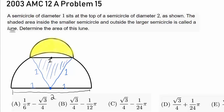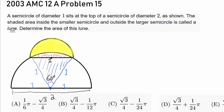We know how to find the area of this equilateral triangle. Also, because we know the radius of the semicircle and we know this angle is 60 degrees — since the equilateral triangle gives us 60-degree angles — we can find the area of this circular sector. That sector is 1/6 of the area of the larger circle, so we know how to find that. This tells us we can find the red area by taking the sector area minus the equilateral triangle area.